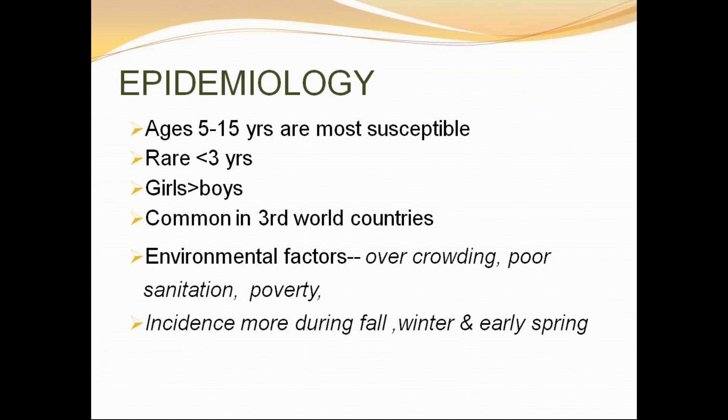The age group most commonly affected is around 5 to 15 years. It is unlikely to see cases under 3 years. There is no clear sex predilection, though some say girls are more affected. It is common in third world countries. Environmental factors include overcrowding, poor sanitation, and poverty. Incidence is more during fall, winter, and early spring.